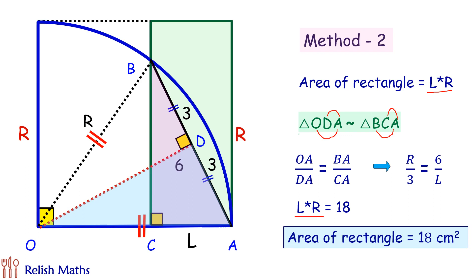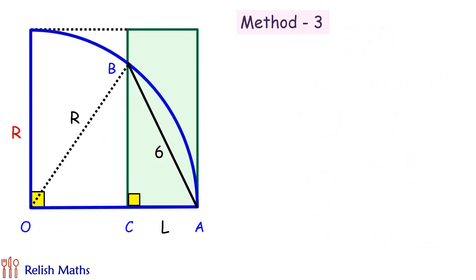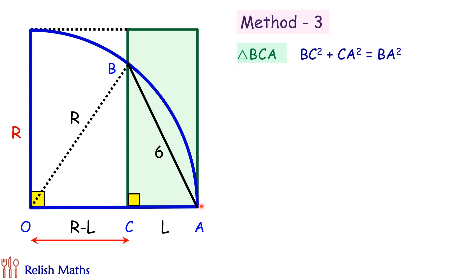Let's check the third way of solving the same question. OA is R, so OC will be R minus L. We have two right-angle triangles. For triangle BCA, applying Pythagoras theorem: BC² + CA² = BA². Putting in the values of CA and BA gives BC² + L² = 36. Let's keep this observation.